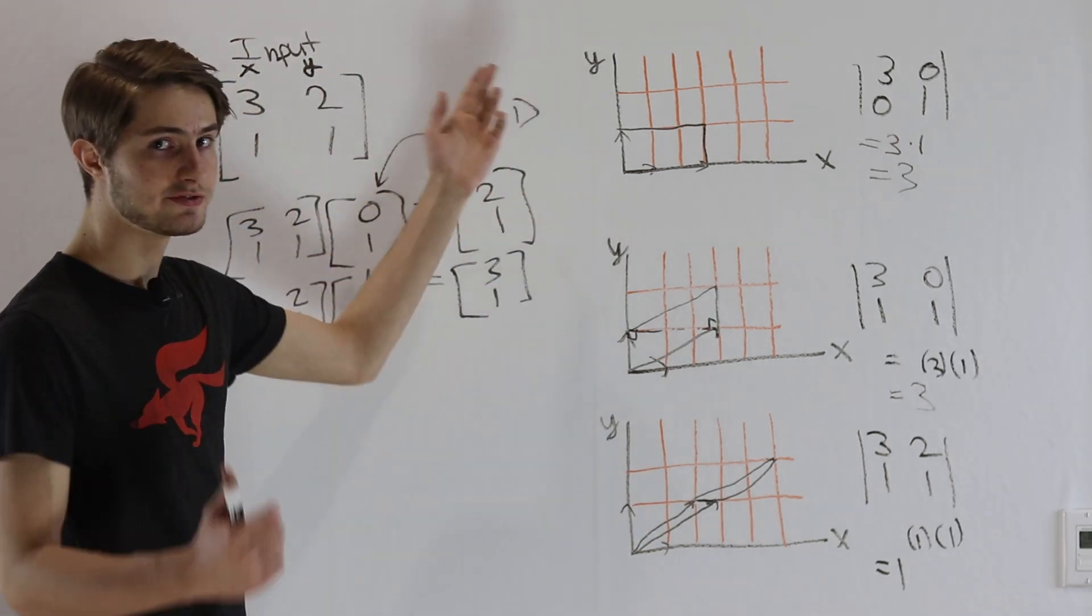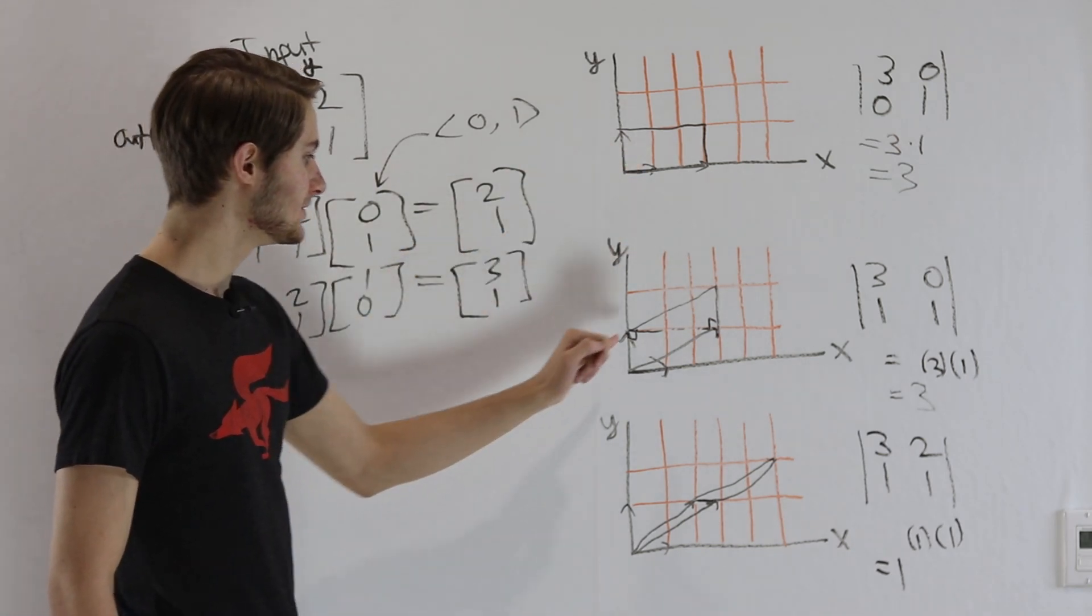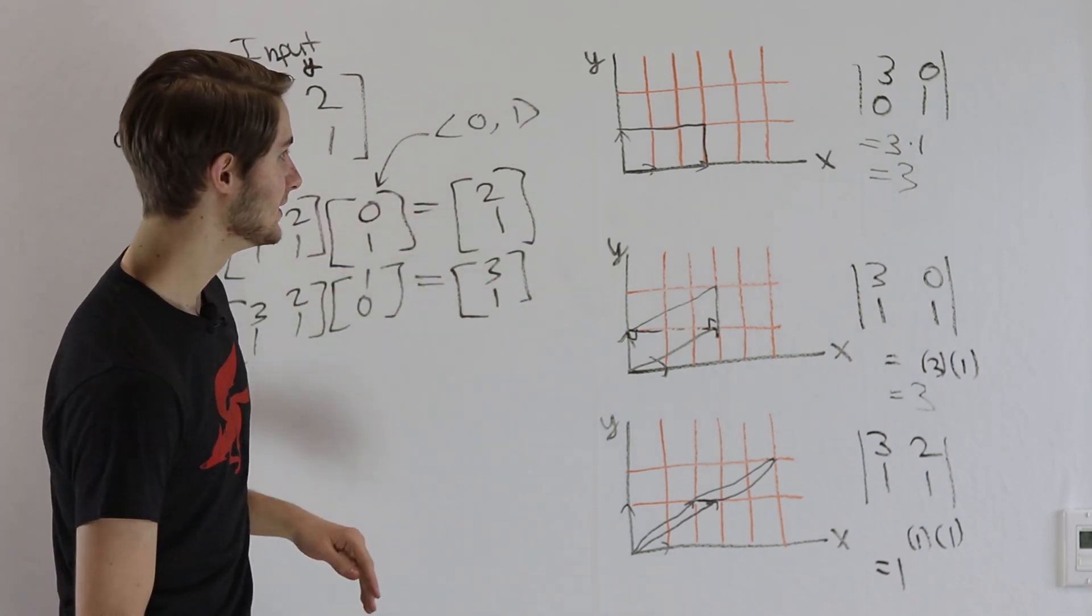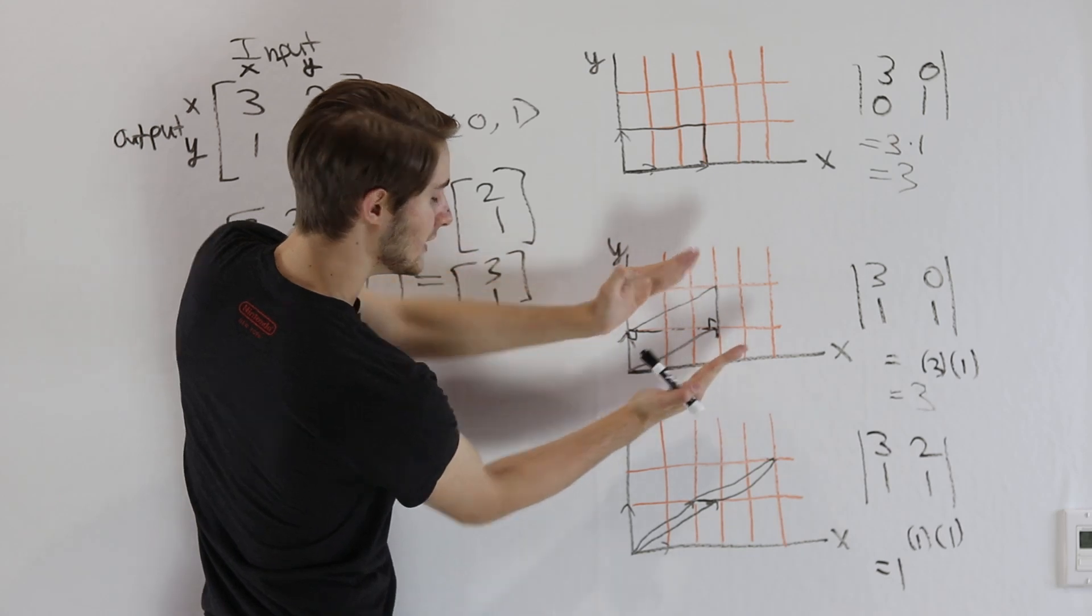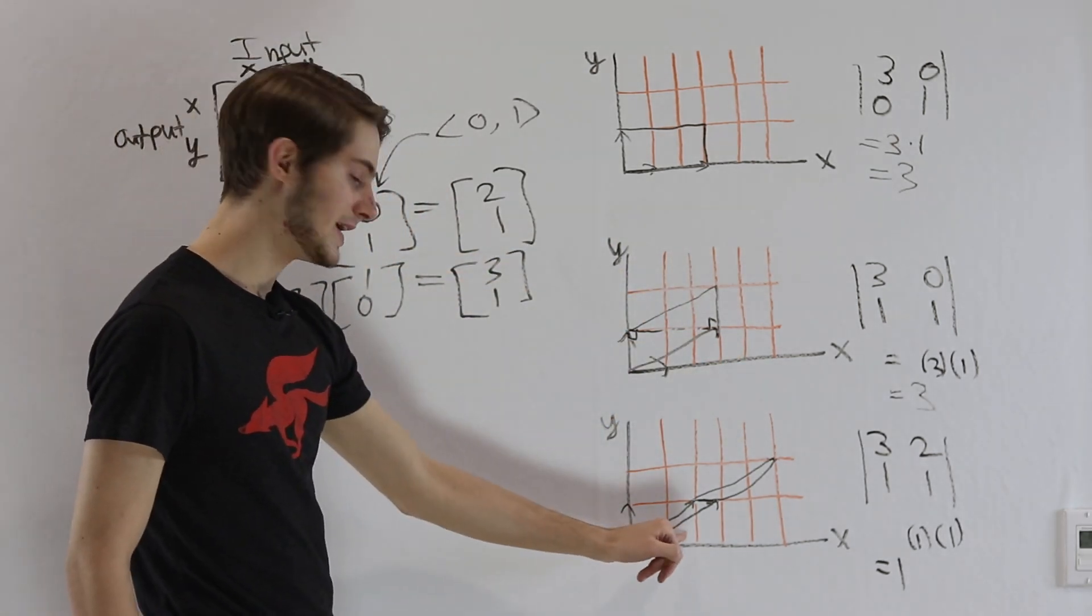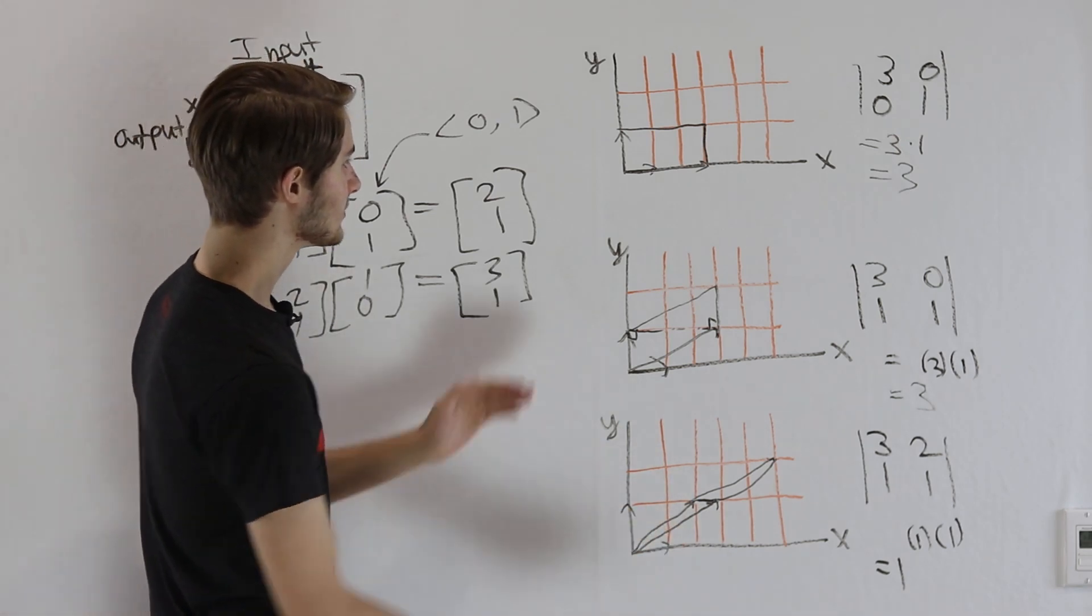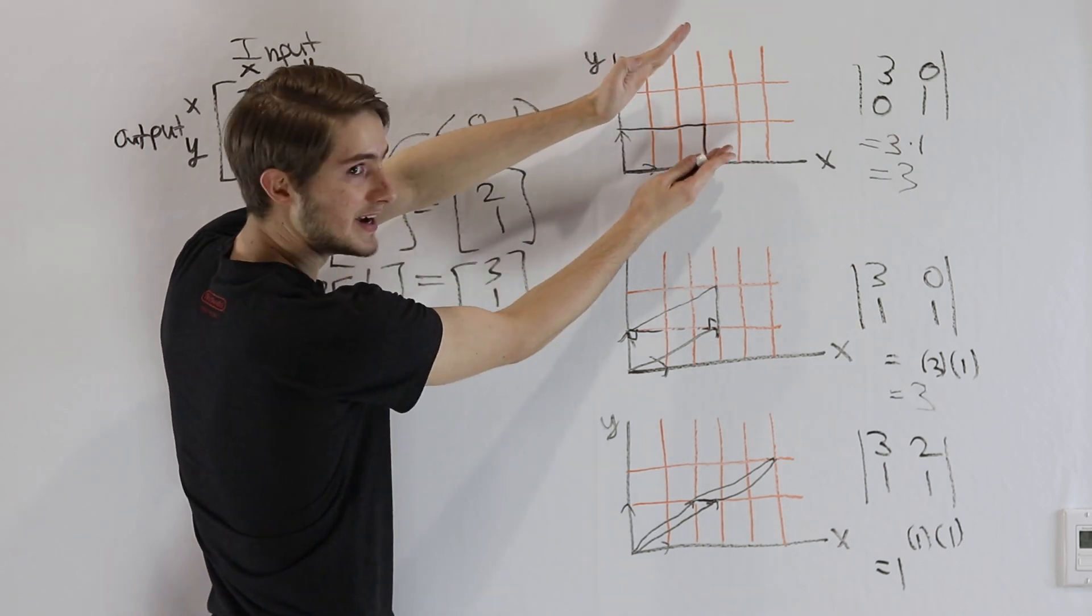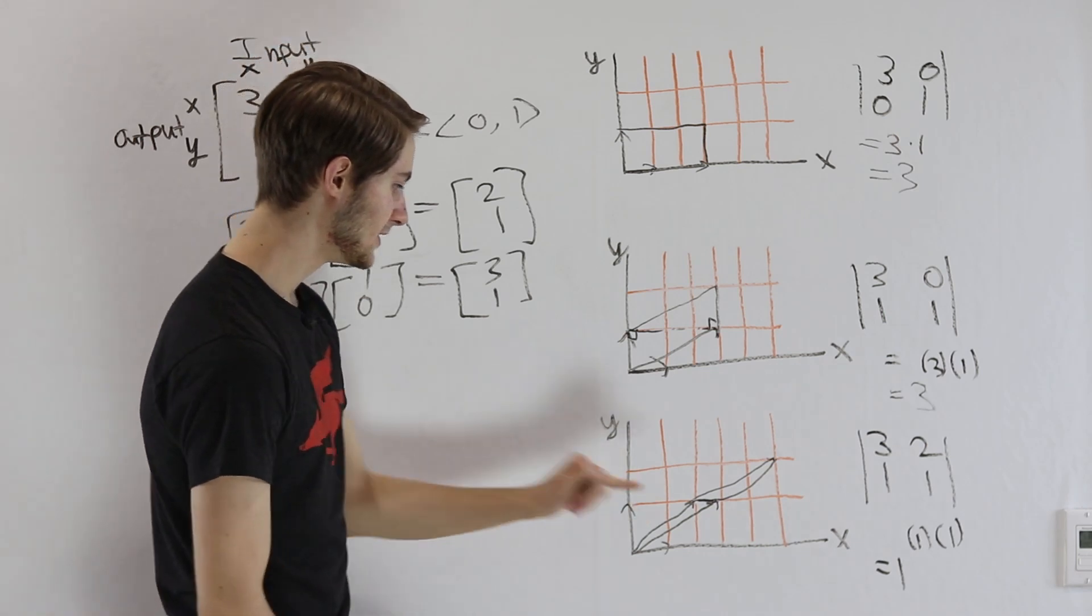This rectangle, we can find the area pretty simple. It's just the base times the height. When we look at this parallelogram here, we can still see that rectangle in this parallelogram. If you think about taking that rectangle and bending it this direction, that doesn't actually change the area. But something different is happening on this bottom diagram here.